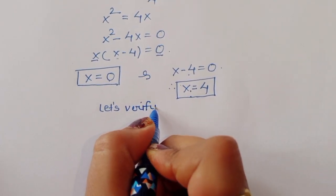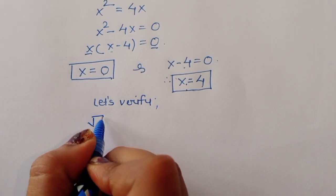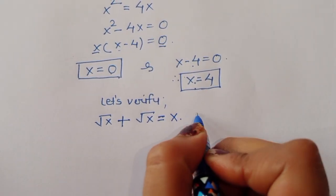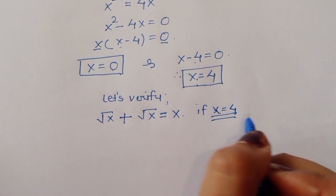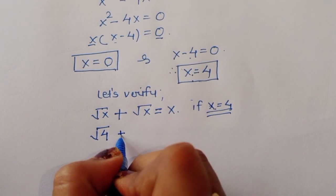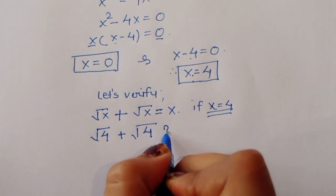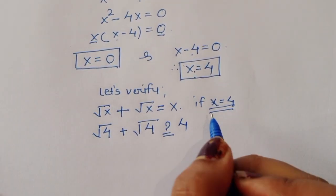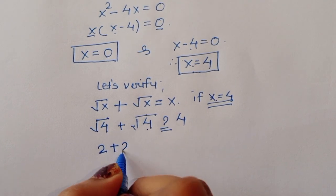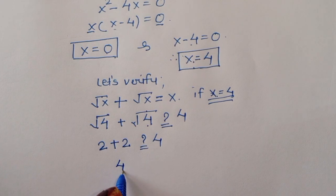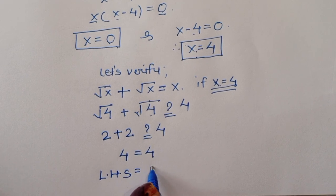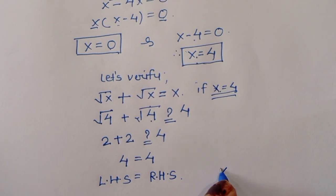Verify: the question is square root of x plus square root of x is equal to x. If x equals 4, then square root of 4 plus square root of 4 equals 4. Square root of 4 is 2, so 2 plus 2 equals 4. LHS is equal to RHS, so the value x equals 4 is correct.